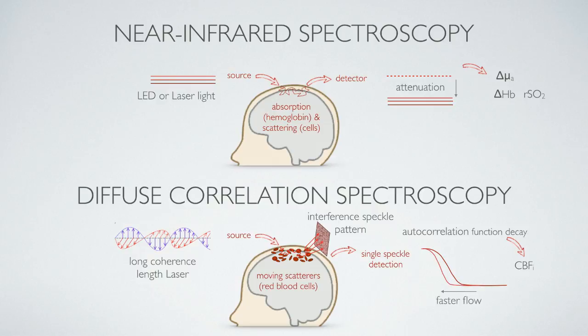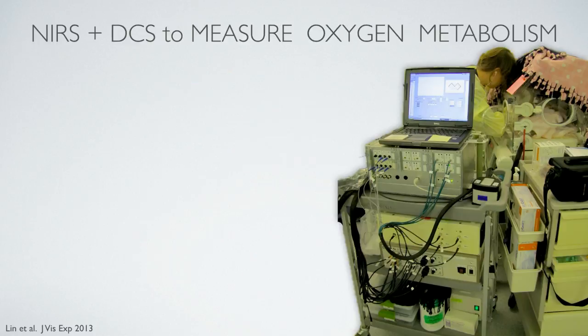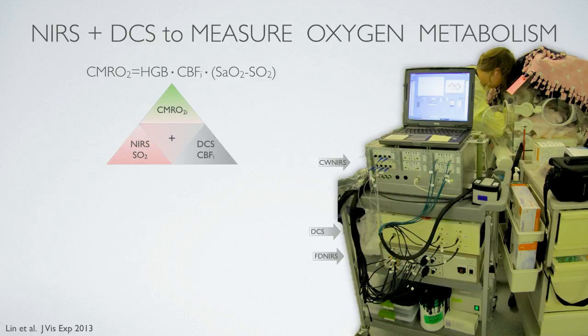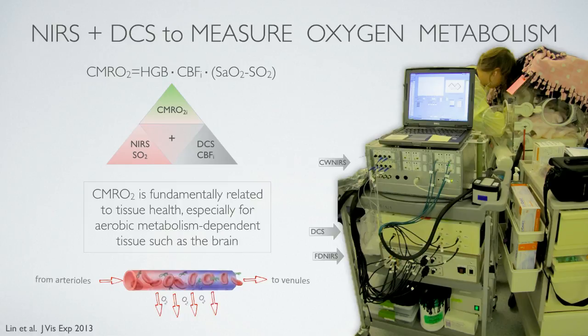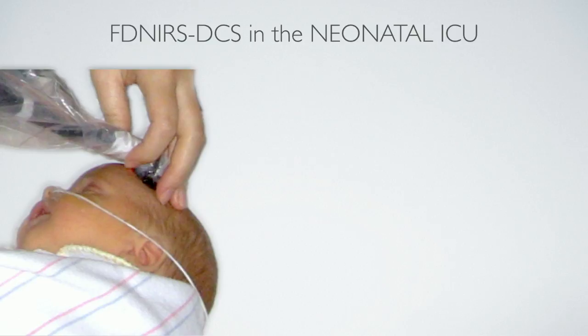Faster decay means faster blood flow. For more than 10 years I've been running NIRS and DCS devices in the neonatal intensive care unit. They allow me to measure hemoglobin concentration and blood flow, but also oxygen metabolism. Cerebral metabolic rate of oxygen, CMRO2, is proportional to the product of blood flow and oxygen extraction fraction. We believe oxygen metabolism is very important for understanding brain health. Our measurements for quantitative brain CMRO2 in infants are simple — we use a handheld probe for a few seconds and measure several spots on the head.